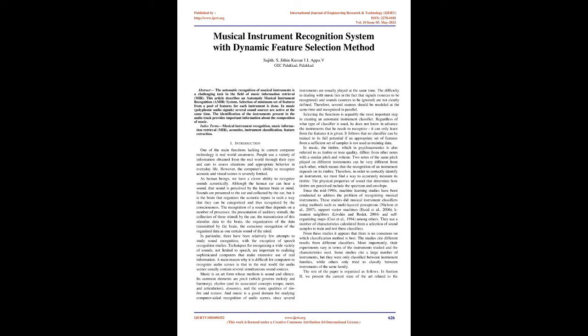Selecting the features is arguably the most important step in creating an automatic instrument classifier. Regardless of what type of classifier is used, it can only learn from the features it is given. No classifier can be trained to its full potential if an appropriate set of features from a sufficient set of samples is not used as training data. In music, the timbre — also referred to in psychoacoustics as tone quality — differs from other notes with a similar pitch and volume.